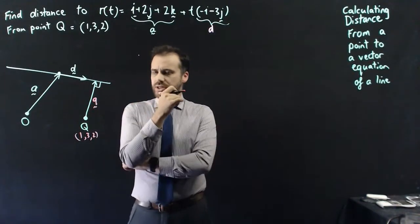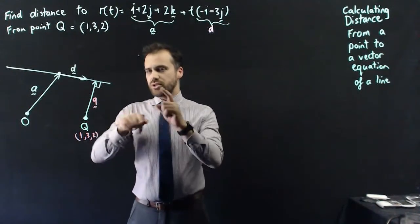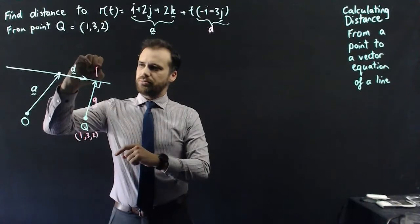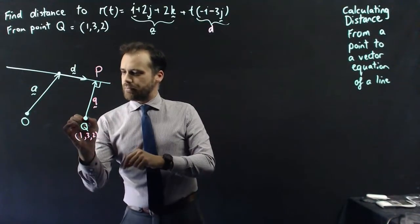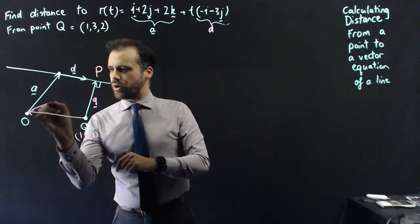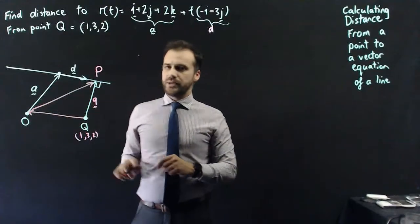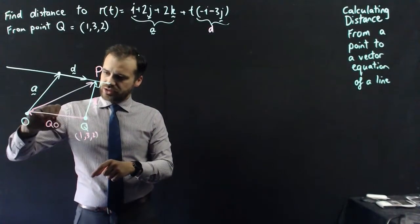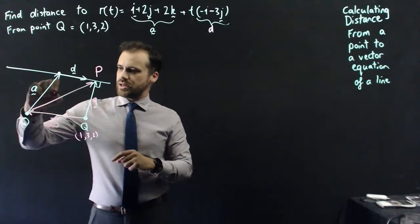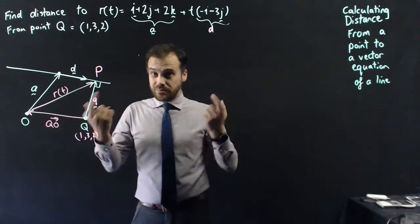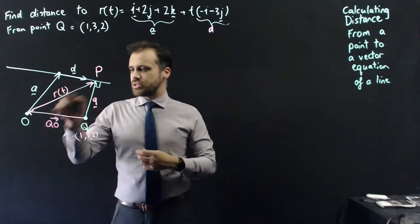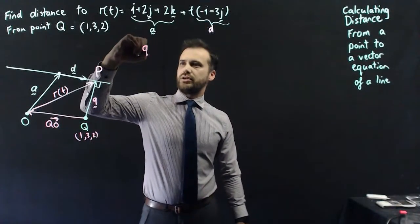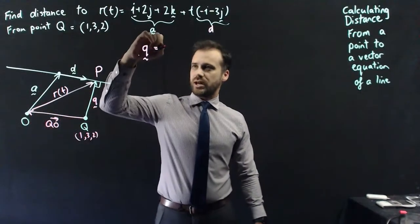How can I find that vector? There's something kind of sneaky here. I could get from q to point p by going from q to o, and then from o to p. This vector plus this vector equals this vector. I'm going to be able to find both of those vectors — this vector here is simply vector q→o, which is easier to find. And this vector here is r with respect to t at some point t; I just don't know what that point t is yet.